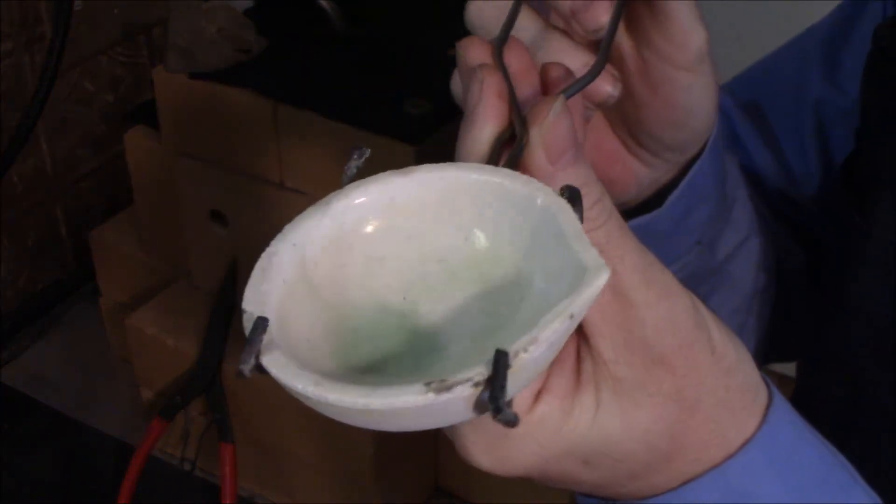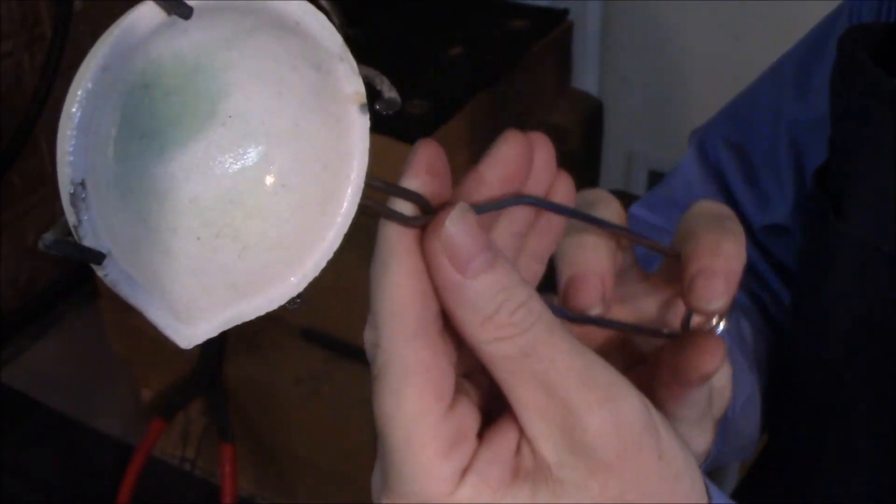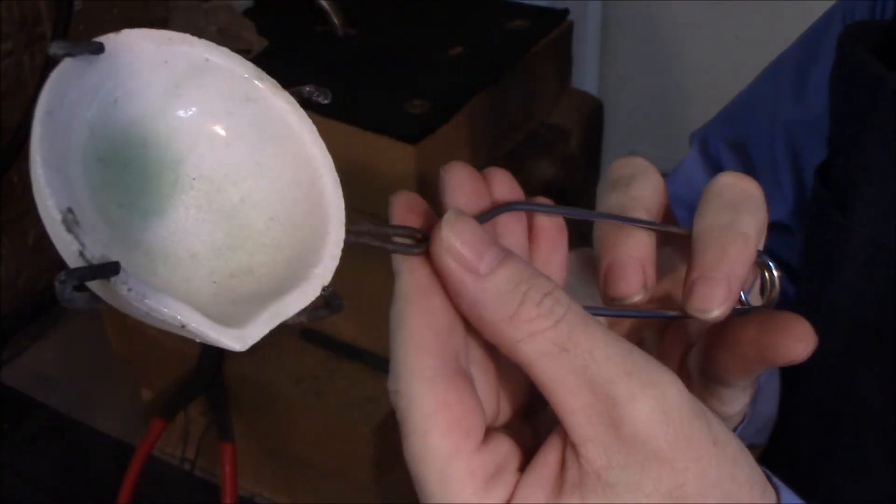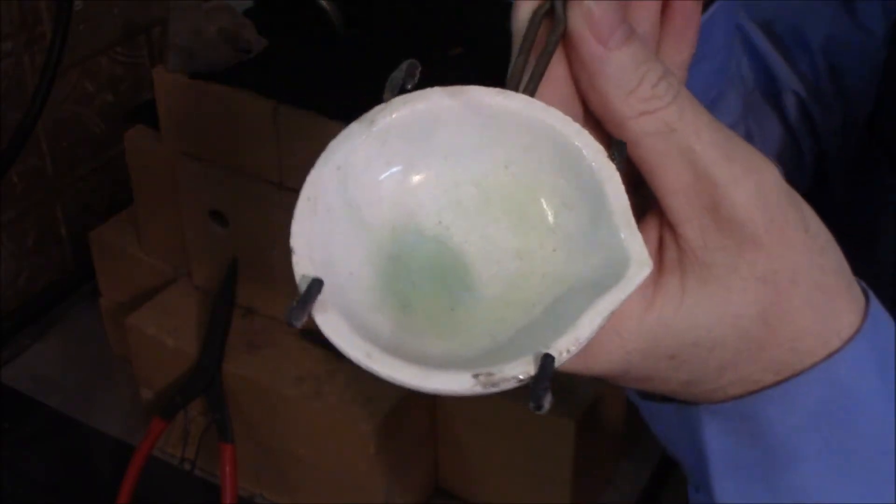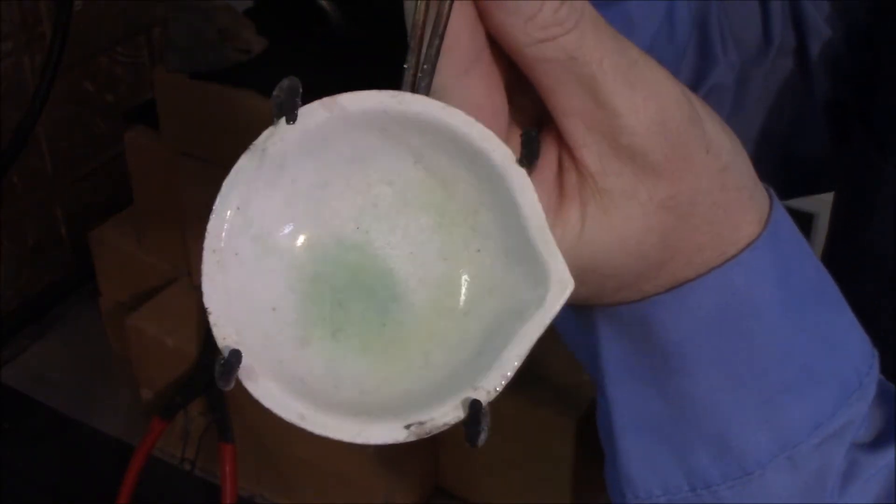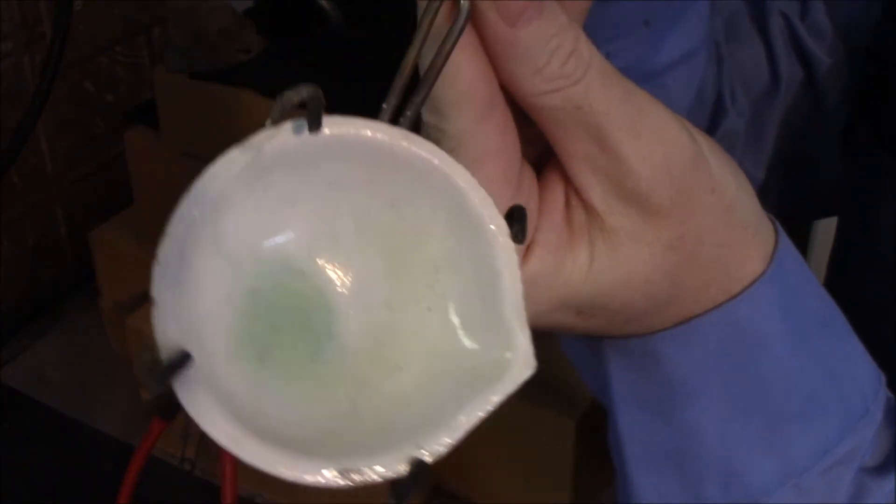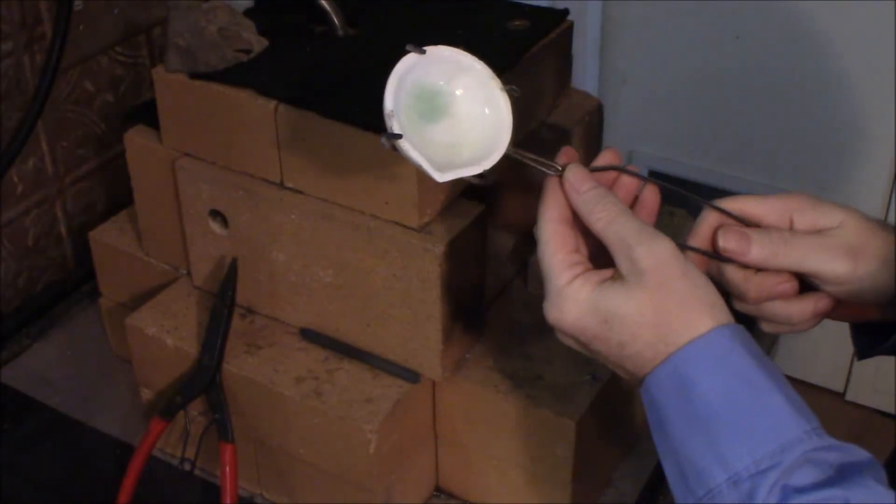I don't know if you can see that in the camera, but you want it really shiny inside, almost like it's glass. But that is a glazed crucible. It is ready to start pouring.